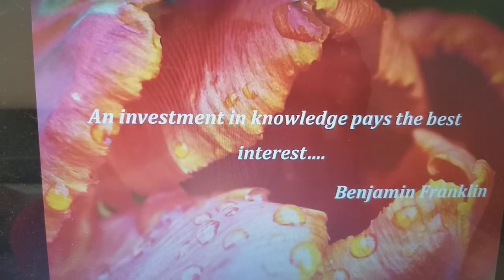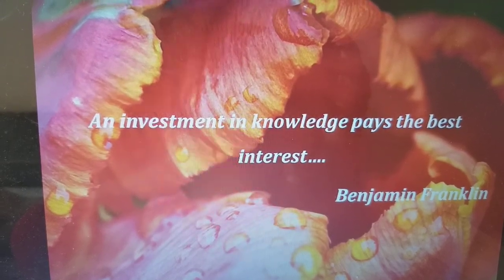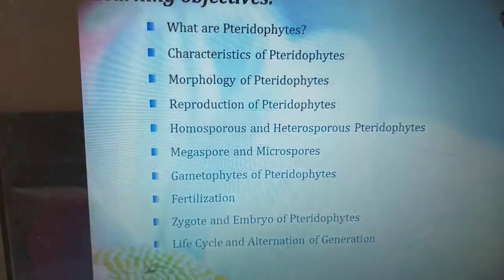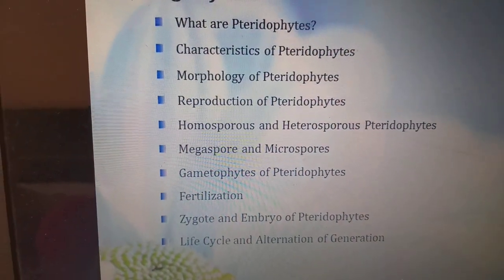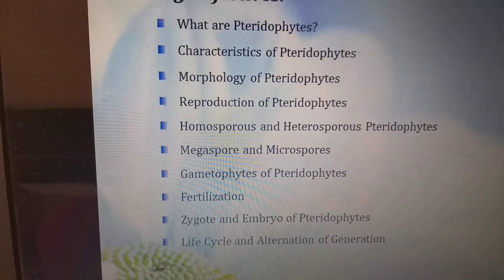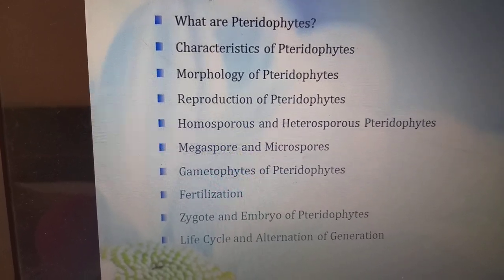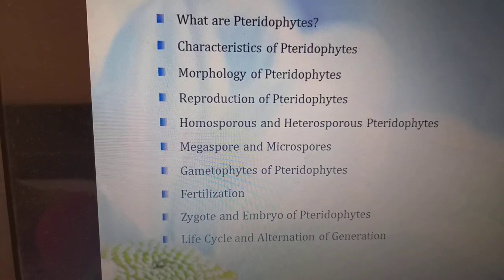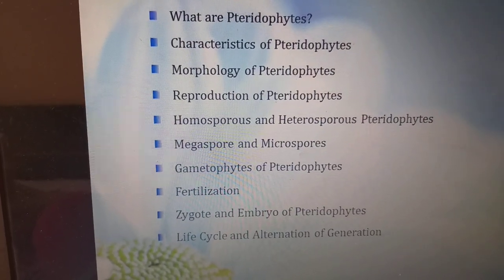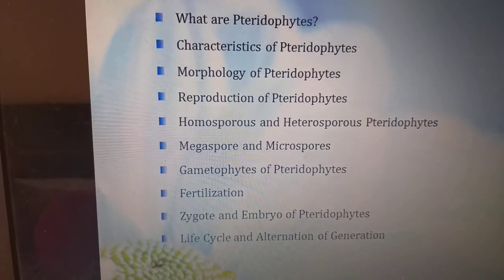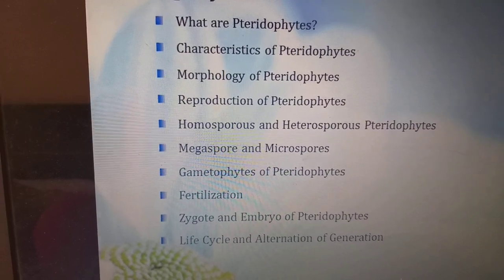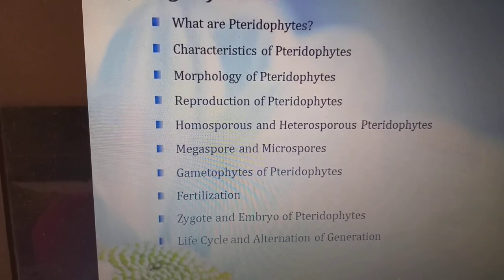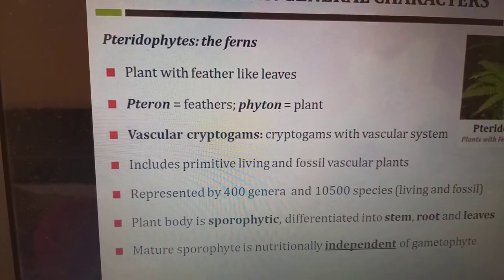Hello friends. Now we are going to see about pteridophytes and its life cycle. In this video, we are going to cover what are pteridophytes, characteristics of pteridophytes, its morphology, reproduction, homosporous and heterosporous nature, megaspore and microspore, gametophytes of pteridophytes and fertilization, zygote, embryo, life cycle, and alternation of generations.